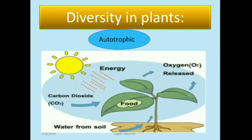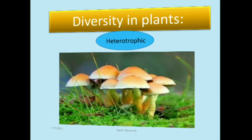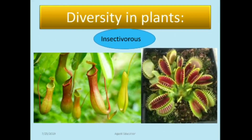To recap: autotrophic plants use sunlight, carbon dioxide, and water through photosynthesis and release oxygen. Heterotrophic plants, such as mushroom, cannot make their own food. Insectivorous plants consume insects.